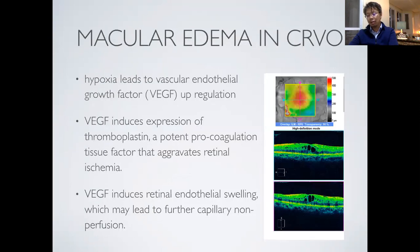In CRVO, there is hypoxia that induces upregulation of VEGF, which appears to play an important role in the development of neovascularization and macular edema secondary to CRVO. The presence of VEGF induces expression of thromboplastin, a pro-coagulation tissue factor that may aggravate retinal ischemia induced by CRVO. VEGF also leads to retinal endothelial swelling, which may lead to further capillary non-perfusion.